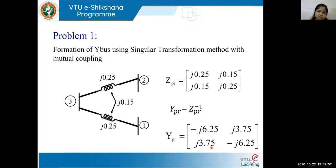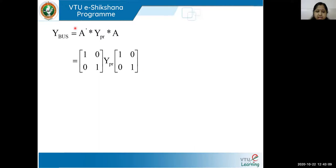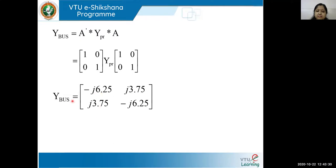Taking the inverse of Z primitive gives the Y primitive matrix. After that, we multiply A-transpose and A to get the Y bus using the singular transformation method. Since we have two simple lines, the A matrix turns out to be an identity matrix, and A-transpose also equals the identity matrix. Therefore, Y bus equals the Y primitive value. This simple example shows how to solve for Y bus when transmission lines are mutually coupled.